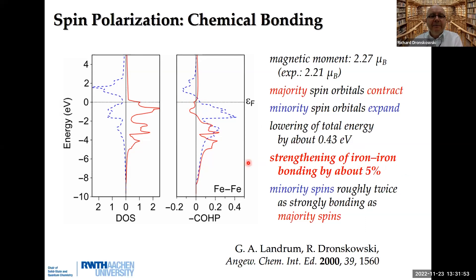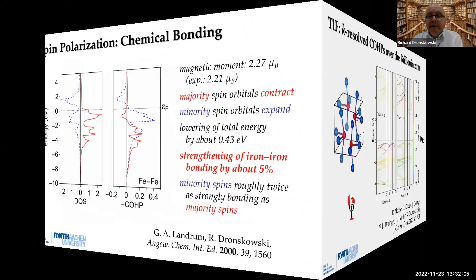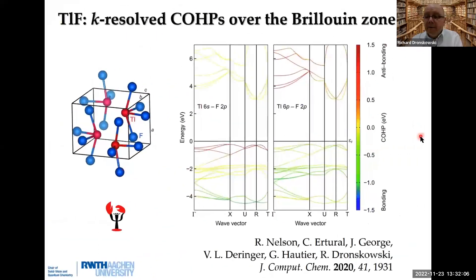I don't have time to go into more details, but it's very interesting also to see that the minority spin orbitals are more important for the chemical bonding than the majority spins. You can make a nice recipe for making new magnetic materials.